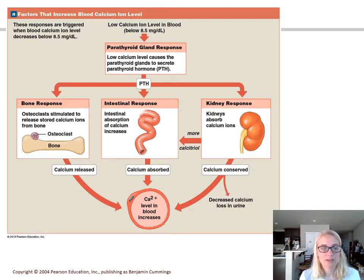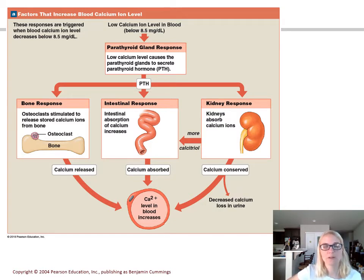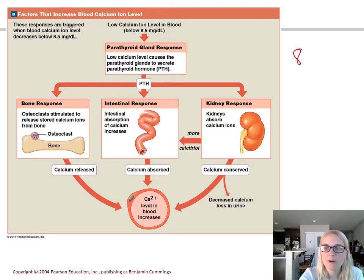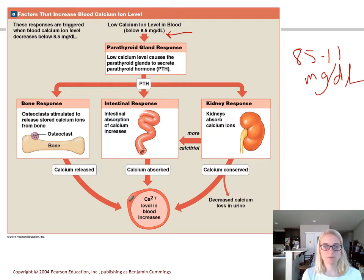The next thing to discuss is calcium regulation. Our bones store a lot of calcium, and I want to talk about the hormones involved in regulating blood calcium. This is a negative feedback mechanism — if blood calcium levels get too high, it triggers a response; if too low, it triggers a response. The goal is to maintain normal, healthy blood calcium levels, around 8.5 to 11 milligrams per deciliter. So what if blood calcium levels drop below that lower limit of 8.5 milligrams per deciliter?